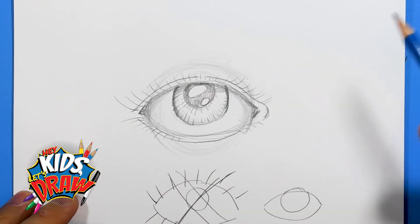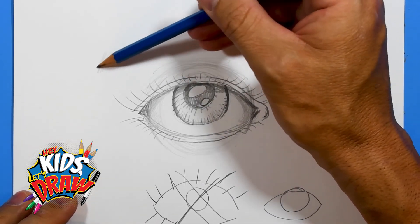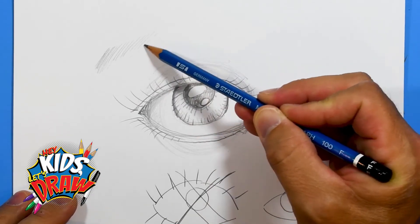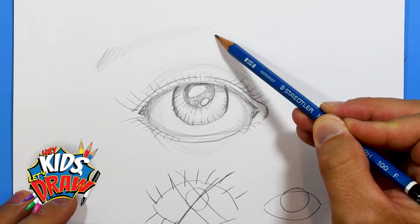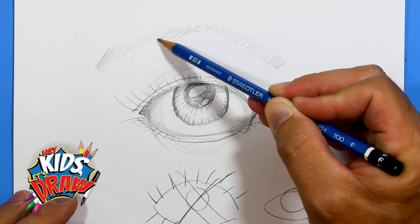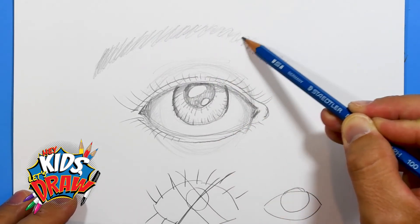Your eyebrow is gonna sit on top and its hairs kind of curve around the eye and then down toward the nose, so it's kind of an arch. I'm just scribbling them in right now to quickly show you.